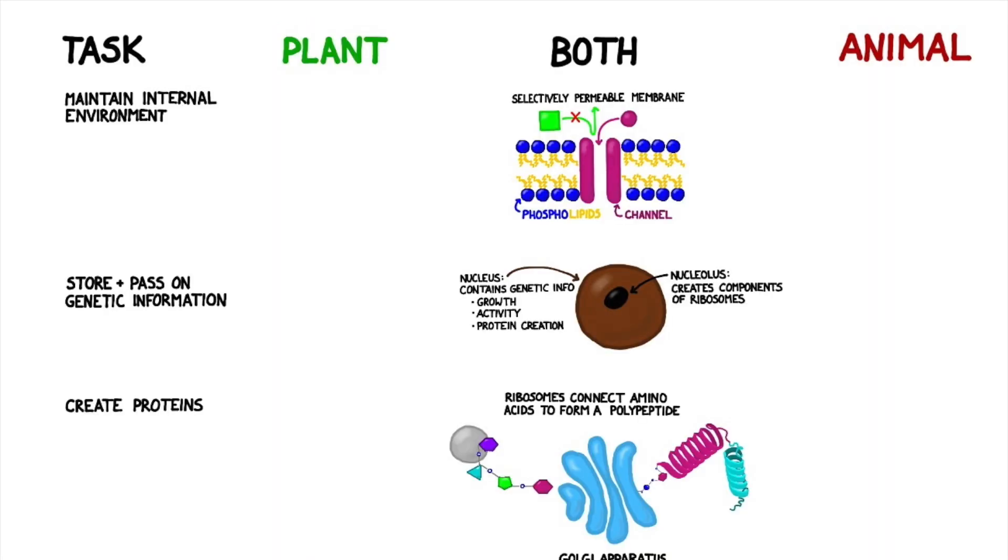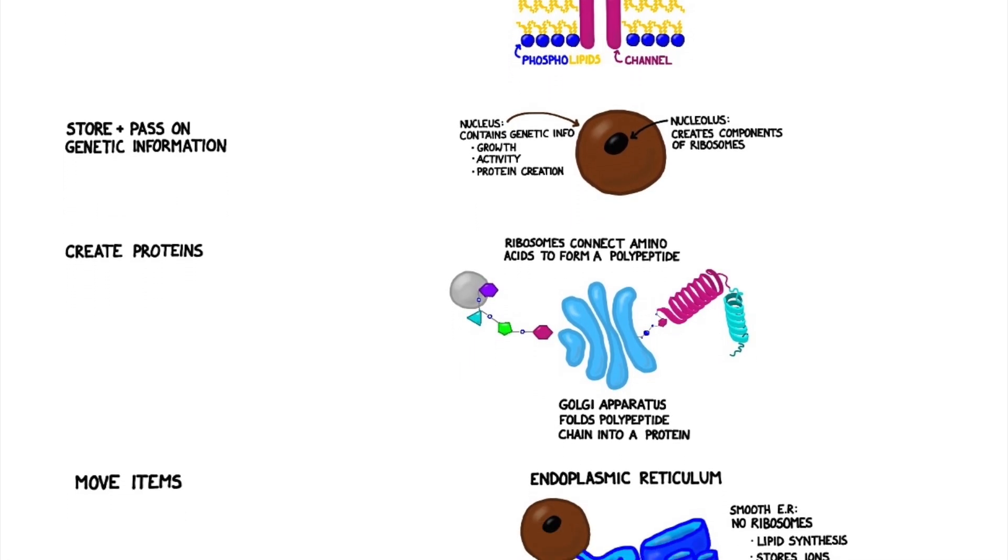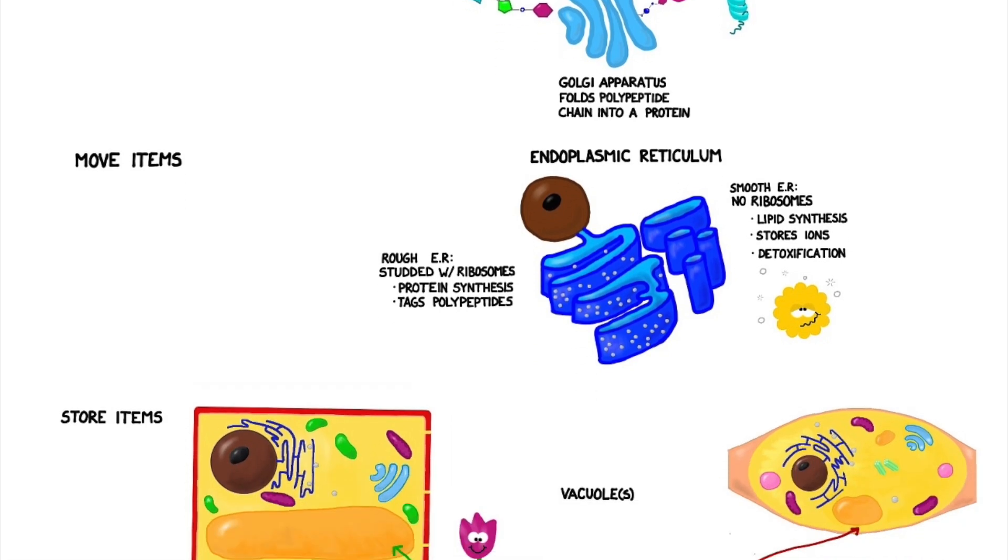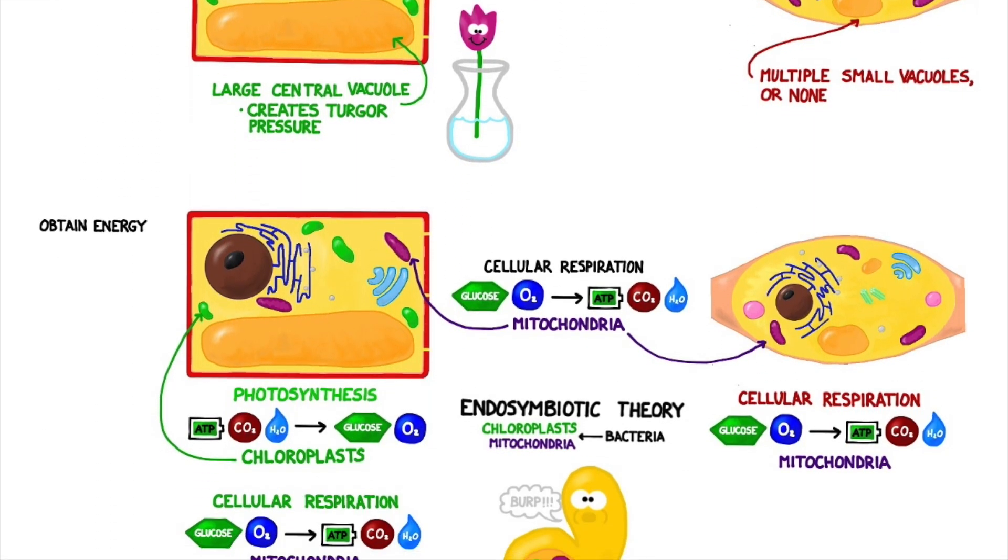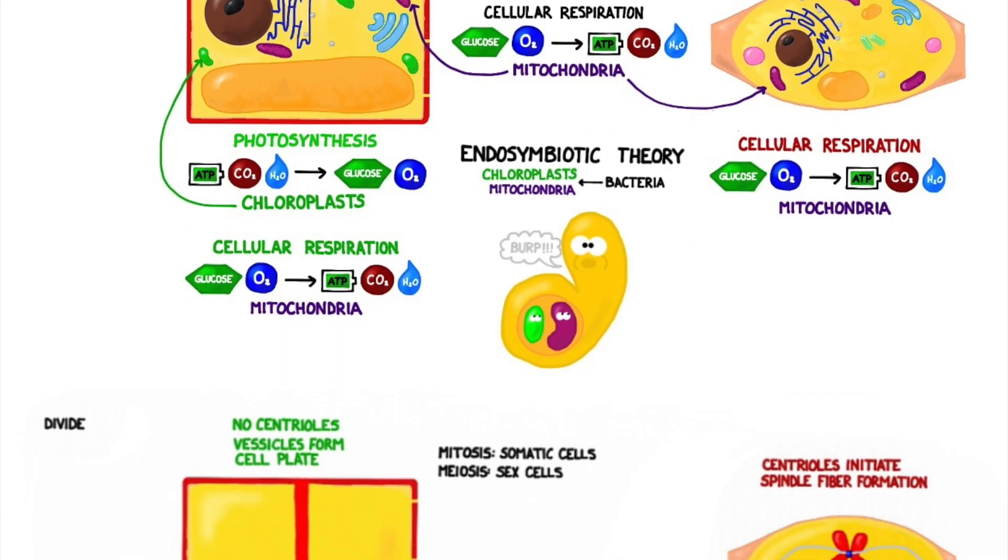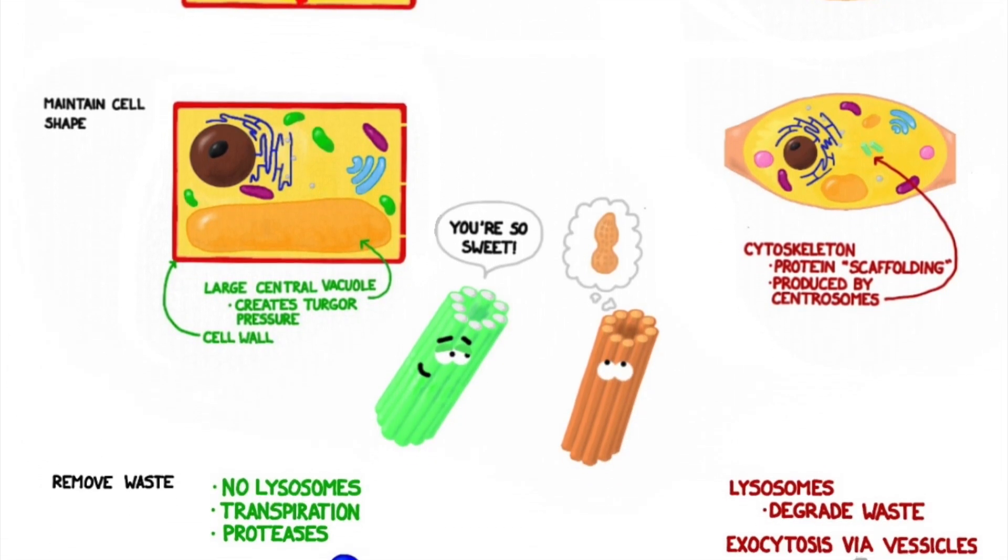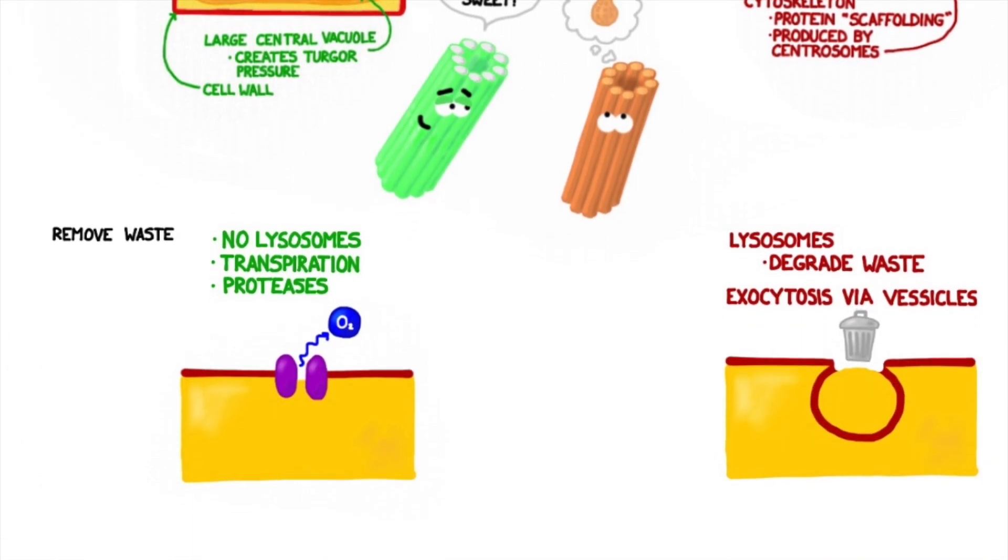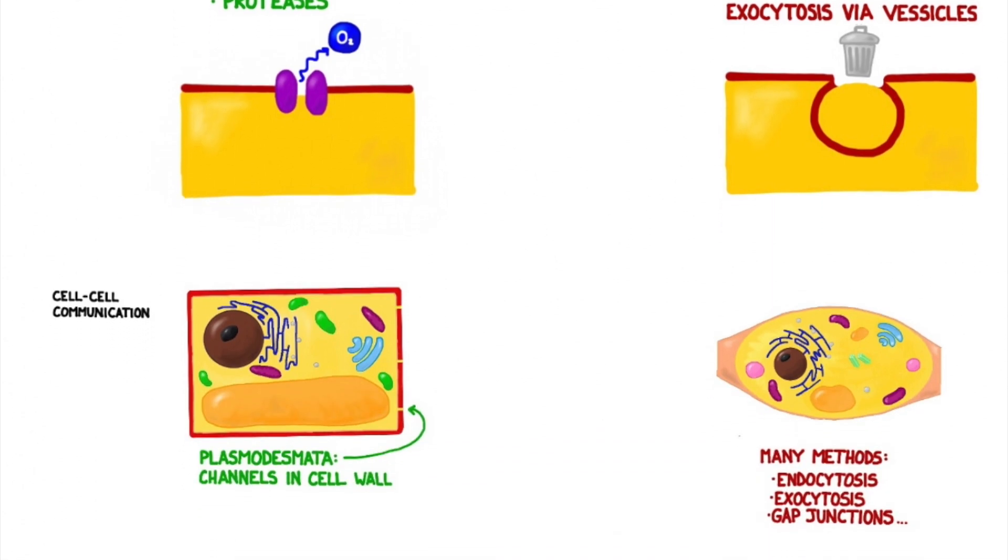Okay, that was definitely a lot of content, so here's a recap. Plant and animal cells are very different from one another, but also have a lot of processes in common. They maintain their internal environment, store and pass on genetic information, create proteins, and move items around the cell in much the same way. They also contain organelles that allow them to store items and obtain energy in related ways. When it comes time to divide, maintain cell shape, remove waste, or communicate from cell to cell, plants and animals require different organelles to get the job done.